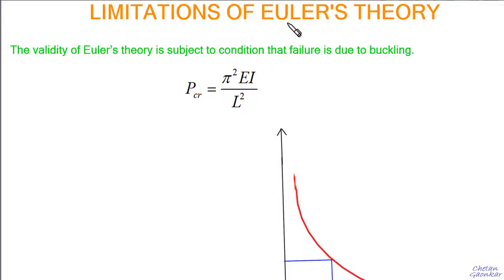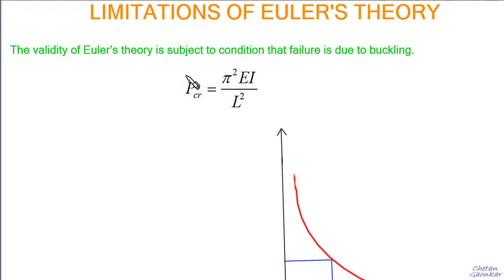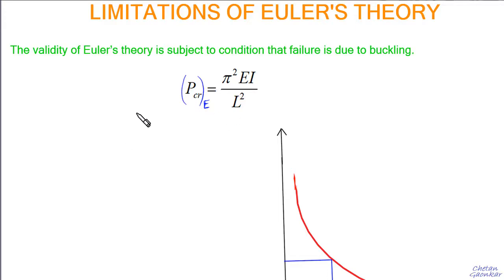In the last video we saw how to use Euler's theory to develop the critical load formula for a column with different boundary conditions. We saw that L is the equivalent length, and it is different for different types of boundary conditions. This critical load, obtained with the help of Euler's theory, let me write this with suffix E. This is what we developed in our last video. Now let me rewrite this expression in some other terms.